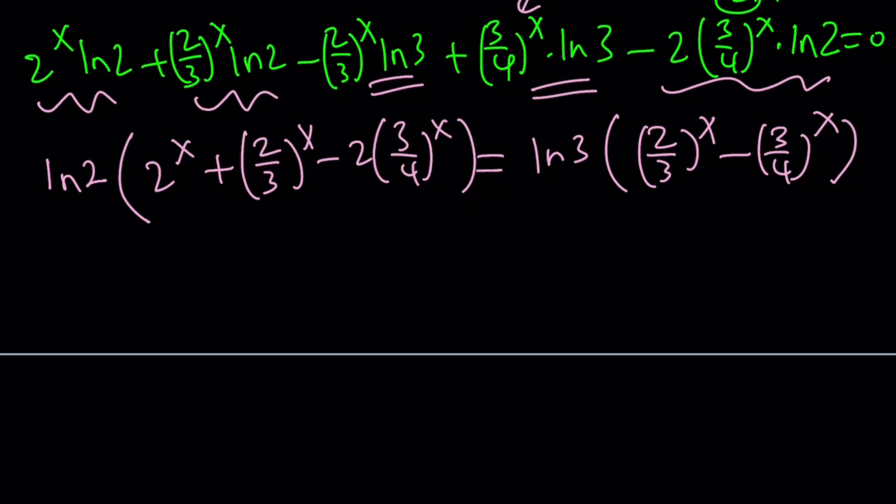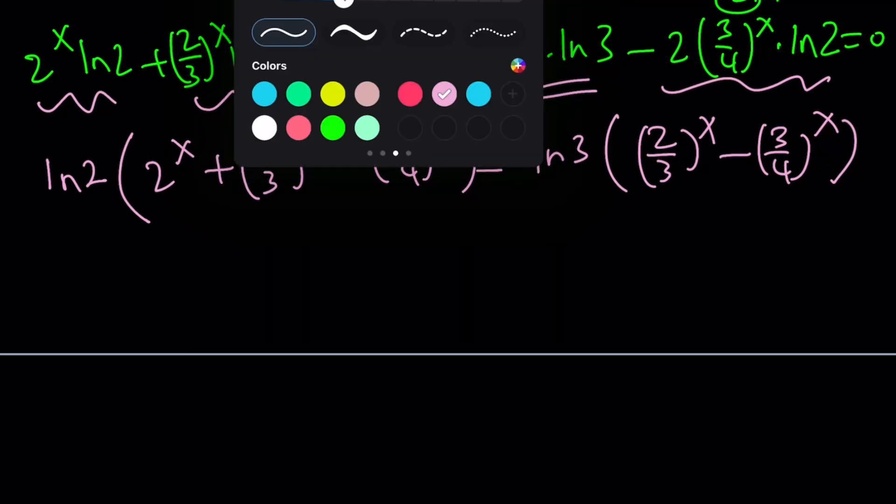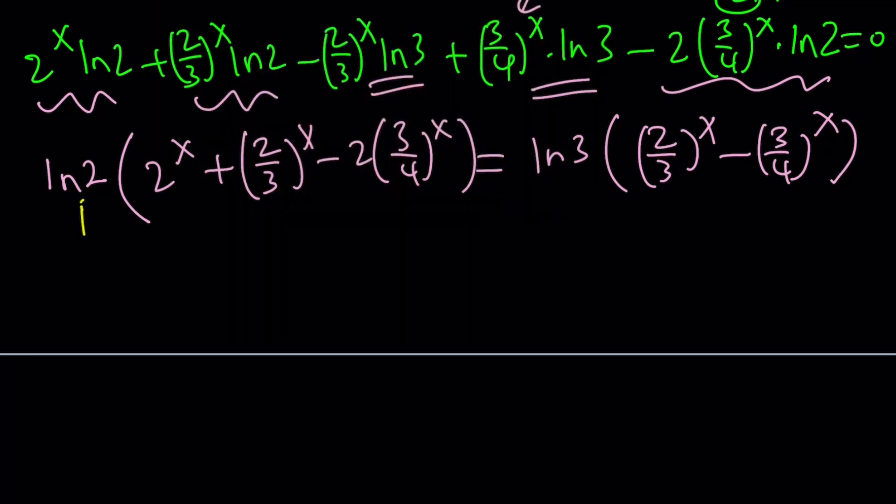But here's one thing that is super important here. Notice that ln(2) and ln(3) are irrational values, right? But these are rational. Why? Because we are raising them—well, not necessarily, but if you think about it, like if x is equal to an integer, they're going to be rational, right?